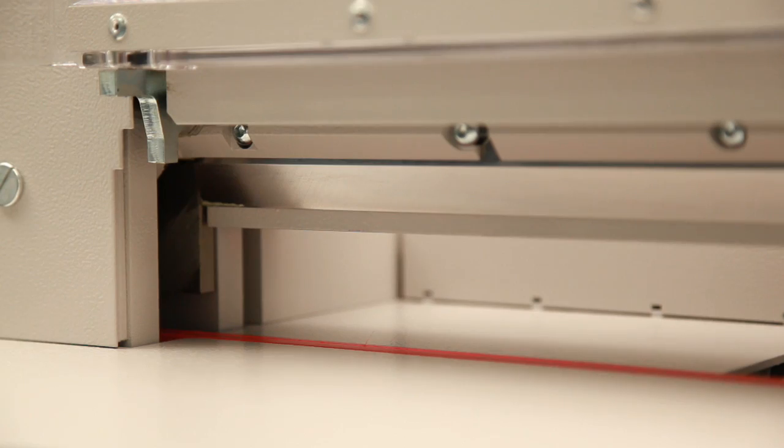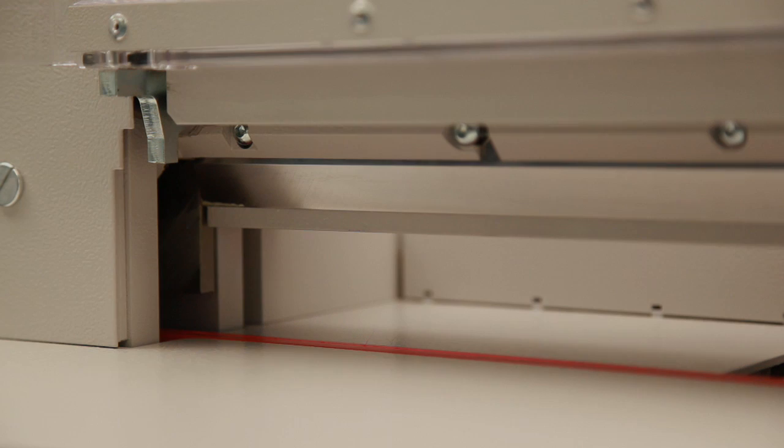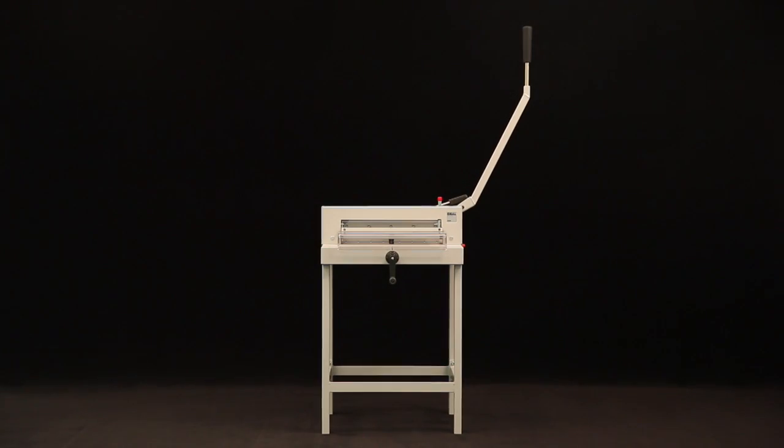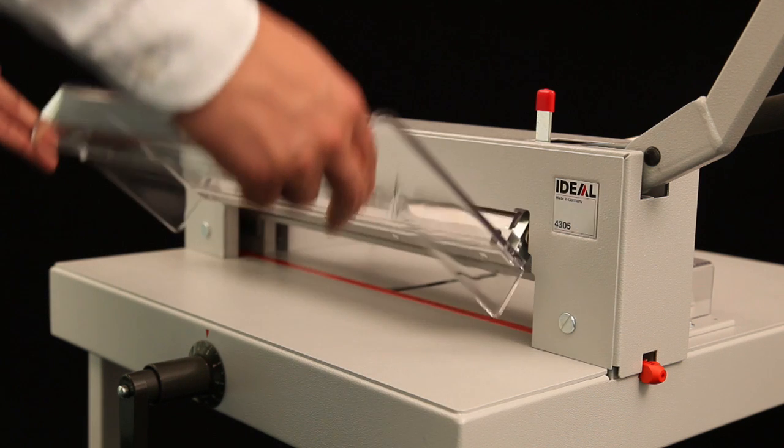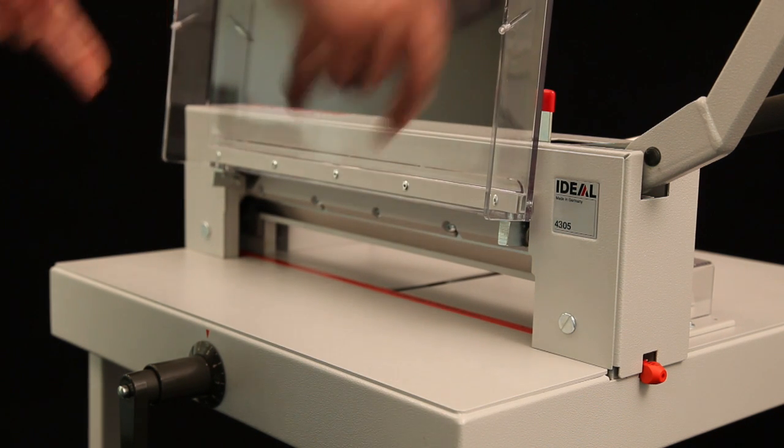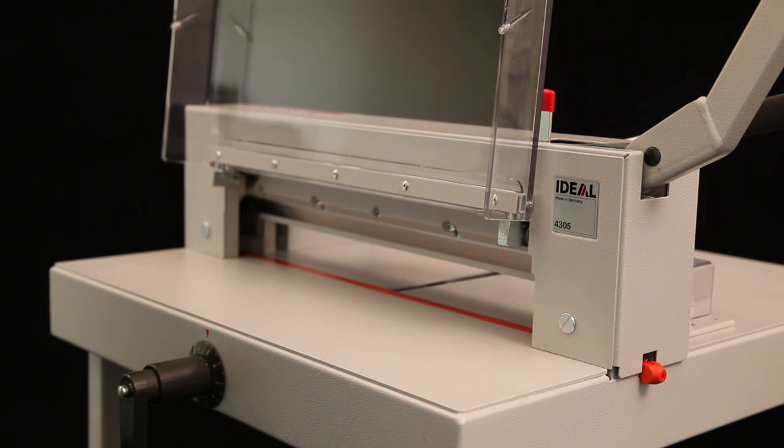Their cutting height is 40 millimeters. The compact, precise guillotine 4305 for manual operations comes like all other models with a hinged transparent safety guard, which is part of the SCS Safety Cutting System. Thanks to the generous cutting height, paper stacks of up to 500 sheets can be easily cut.